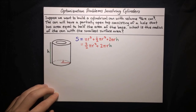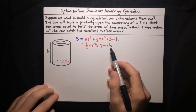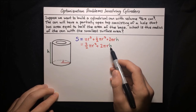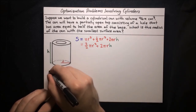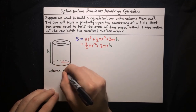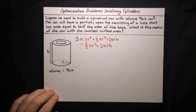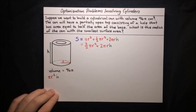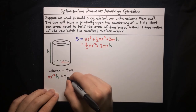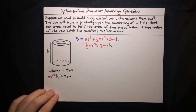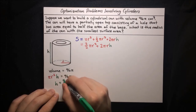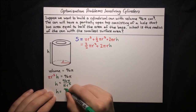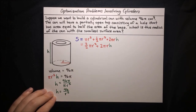We'd like to make S a function of r, so we need to write h in terms of r. We're told the volume is 96 pi cubic centimeters. The volume is the area of the base times height: pi r squared h equals 96 pi. Solving for h: h equals 96 pi over pi r squared, and the pi's cancel, so h equals 96 over r squared.